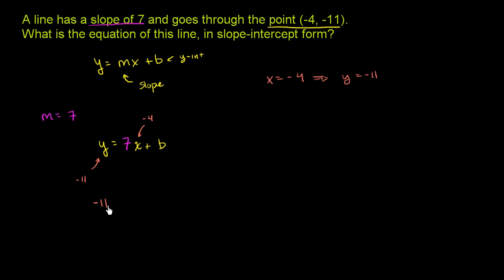So y is negative 11 when x equals negative 4. So negative 11 equals 7 times x, and in this case x is negative 4, plus b.